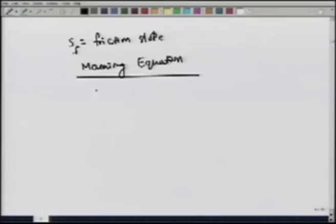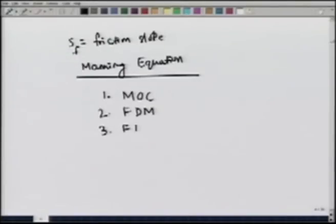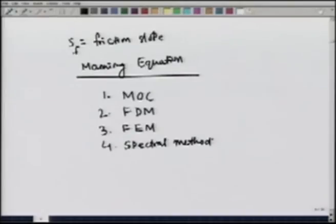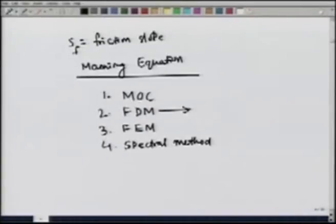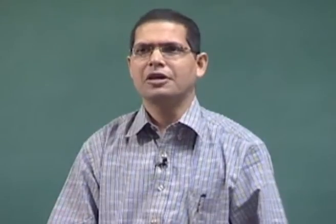Coming back to the numerical solution, the methods include: method of characteristics, finite difference method, finite element method, and spectral methods. However, our discussion is limited to the finite difference method. The method of characteristics is generally used in pipe flows, but in channel flows we generally use the finite difference method.